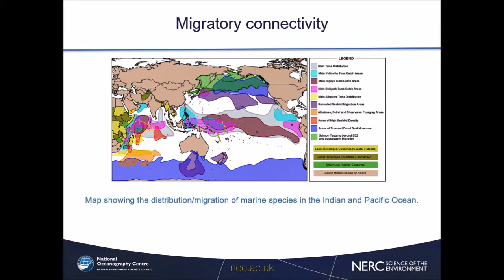Let's have a look at migratory connectivity first. This map shows a compilation of recent data on migratory marine species such as tuna, sharks, and turtles. The main takeaway from this plot is that migratory species are quite ubiquitous in the ocean and they do straddle both high seas and coastal zones.